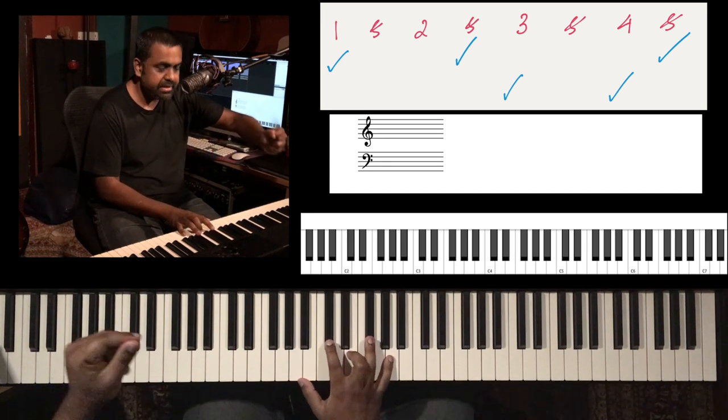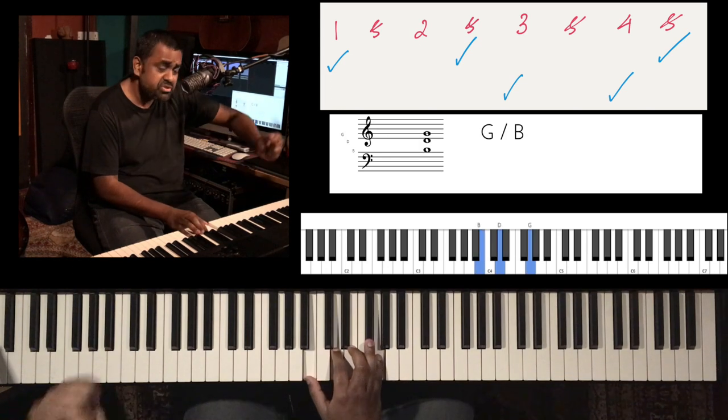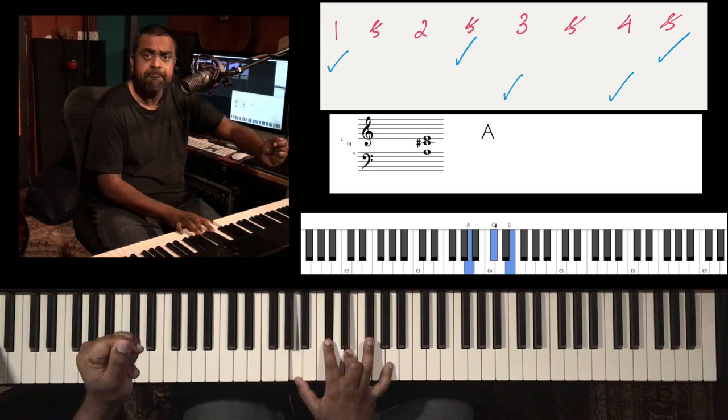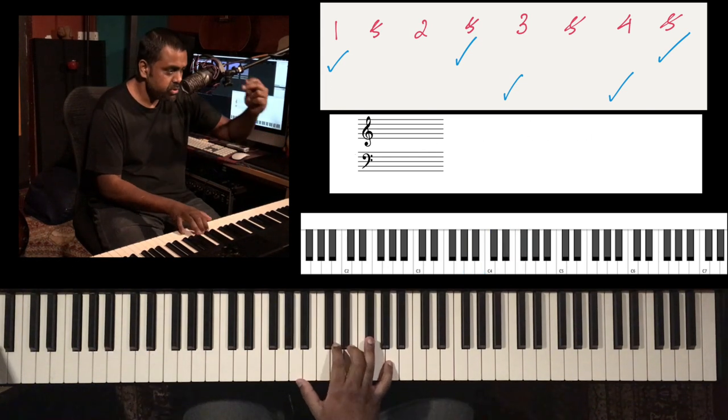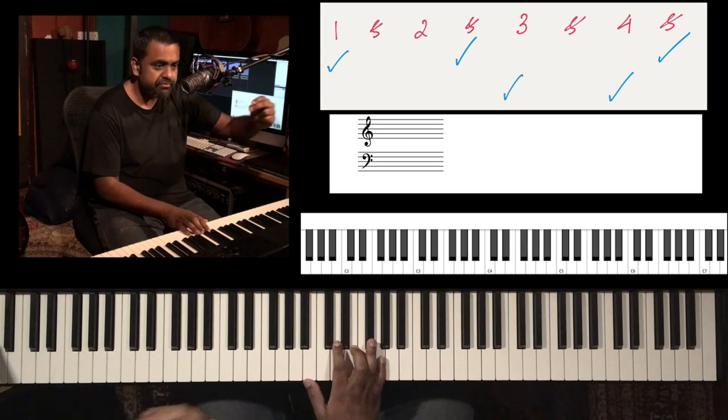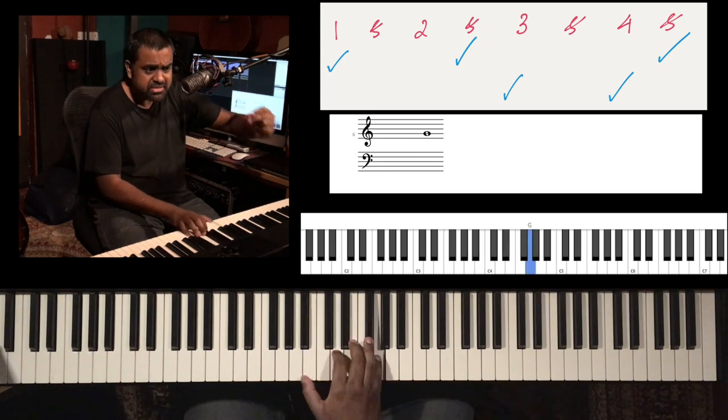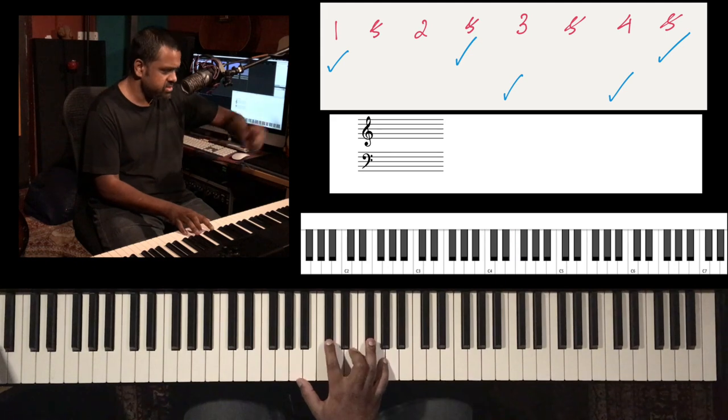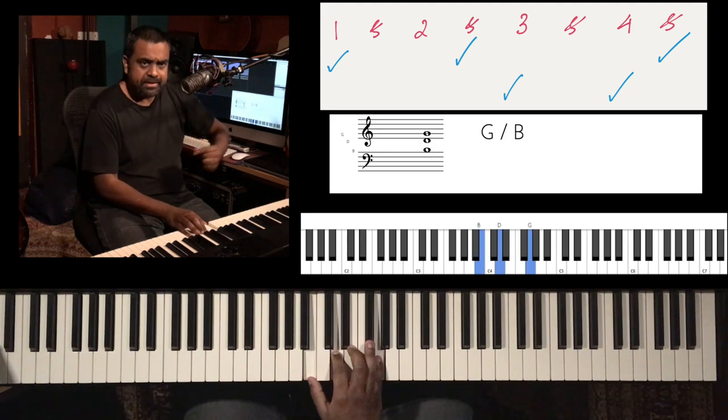One and two and three and four and one and two and three and four. I hope you got that. Another very important tip to make this sound very pro is to alter the duration of each of your chords. You could say some chords are going to be staccato and some chords are going to be legato.